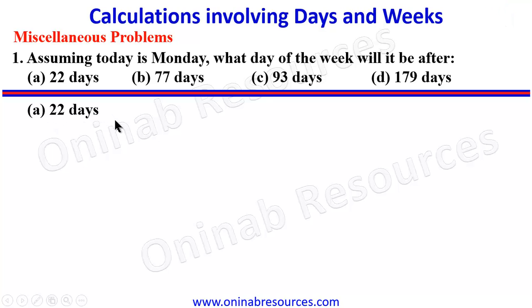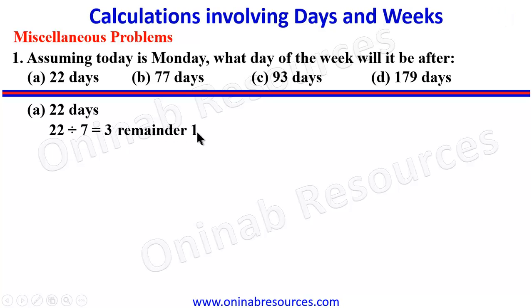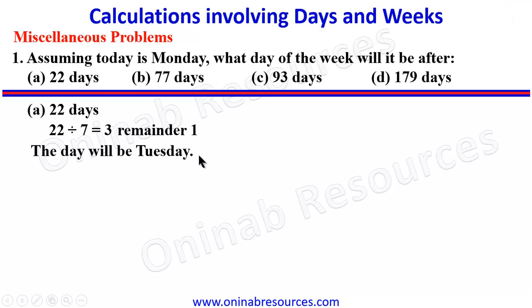22 divided by 7 gives 3 remainder 1. We have 3 weeks and 1 day, which means we count 1 day after Monday. The day after Monday is Tuesday. Therefore, assuming today is Monday, after 22 days the day will be Tuesday. That's all for A.